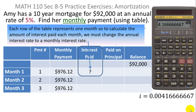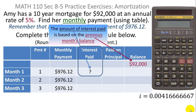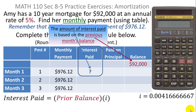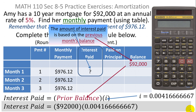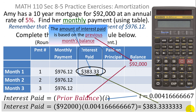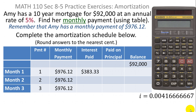Once we have the monthly interest rate i, all we do is take the previous month's balance and multiply it by i. The balance owed in the previous month is the principal for the next month's interest calculation. So we take the $92,000 previous balance multiplied by i. That gives us 383.1 repeating, which we round to the nearest cent: $383.33. So for the first month, the interest paid was $383.33.